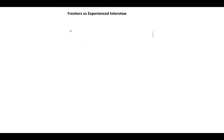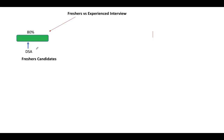The interview process is very different for fresher candidates or undergraduates appearing for campus placement versus experienced candidates wanting to switch companies. For fresher candidates appearing for interviews at private companies, you can expect 80 percent of questions on data structures and algorithms, followed by 10 percent on design — specifically OOP design, not system design — and 10 percent on project work from your internship or college curriculum.